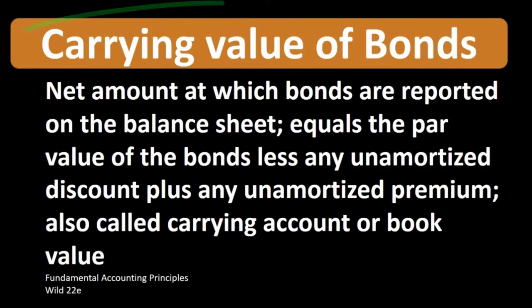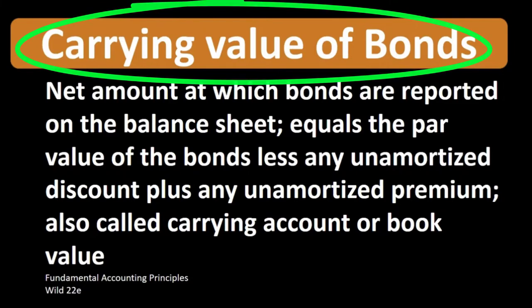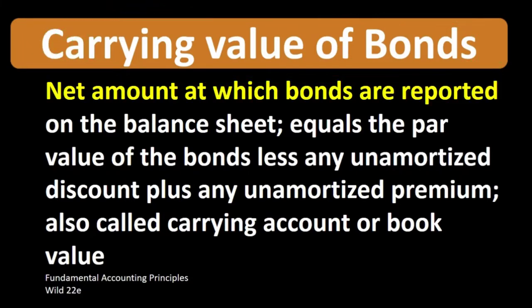According to Fundamental Accounting Principles, Wild 22nd edition, the definition of carrying value of bonds is: the net amount at which bonds are reported on the balance sheet, equal to the par value of the bonds less any unamortized discount plus any unamortized premium — also called carrying amount or book value.